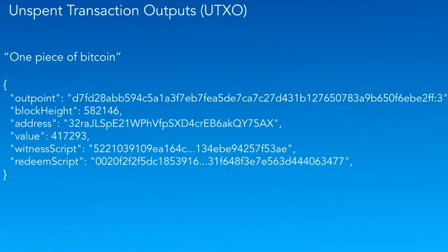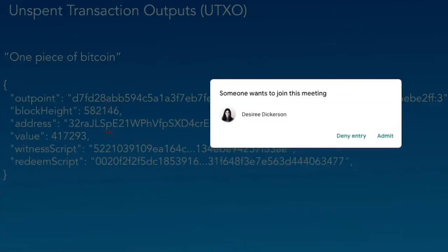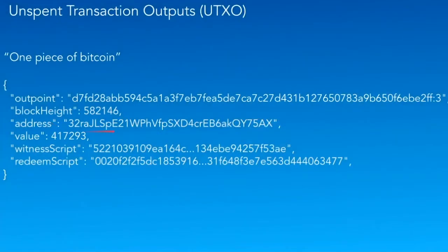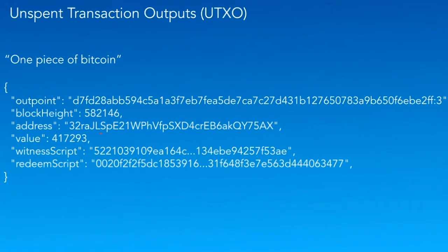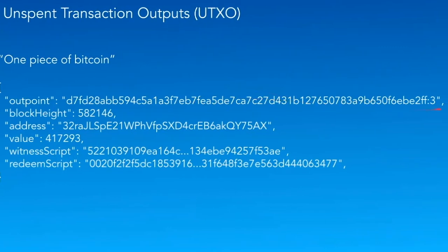So what are unspent transaction outputs, or UTXOs? When somebody sends you Bitcoin, what they're doing is signing over a little bit of Bitcoin to you directly. They use your address, which you've provided to them. With the address, the network can lock the funds up for the recipient so that only the recipient can spend them later. The value is given an amount of satoshis — here we'd be looking at about four millibitcoins. Each unspent transaction output is uniquely identifiable on the network, and every participant in the Bitcoin network tracks every piece of Bitcoin that exists, identified by these strings of characters.